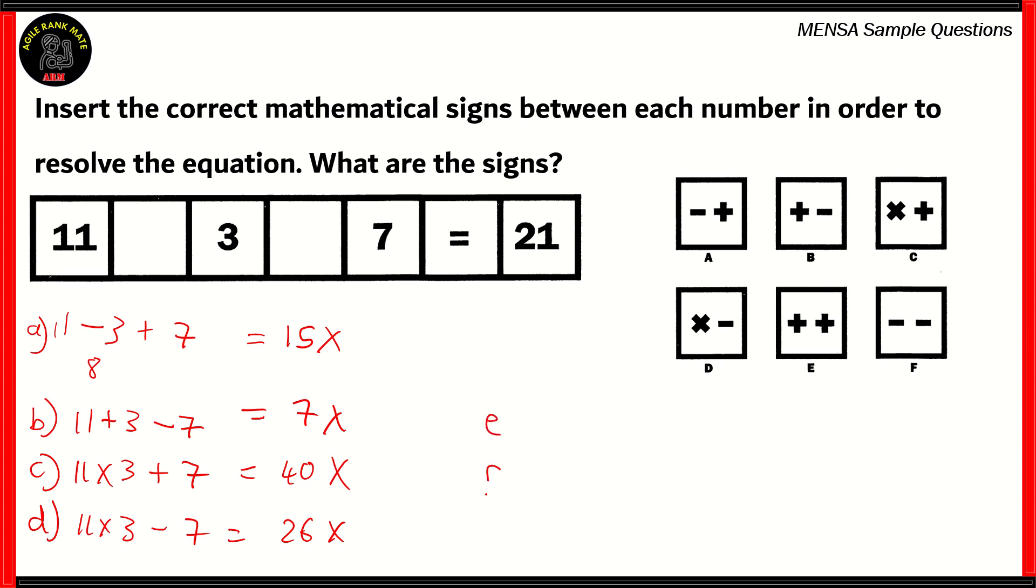What about options E and F? Well, if you look at F, it asks us to subtract across both sides. So 11 minus 3 is 8. 8 minus 7 is 1. Again, not the right answer. So therefore, by elimination, we find that option E is the only right answer. So if you add all three of these numbers, 11 plus 3 gives you 14. 14 plus 7 gives you 21, which is correct. So therefore, option E, the pair that contains two addition signs, is the right option.